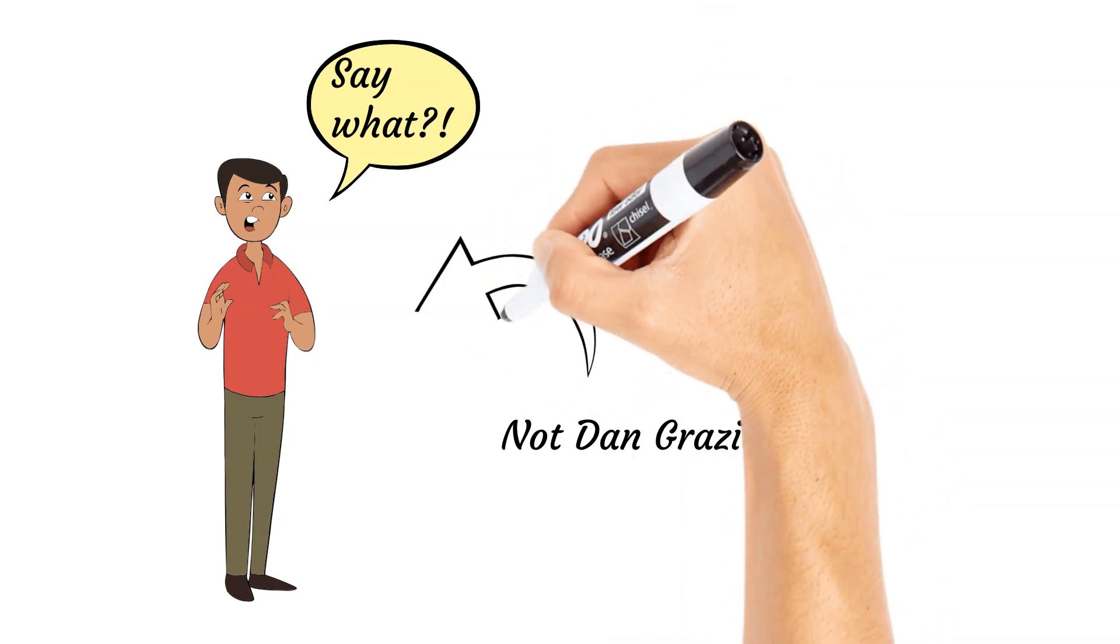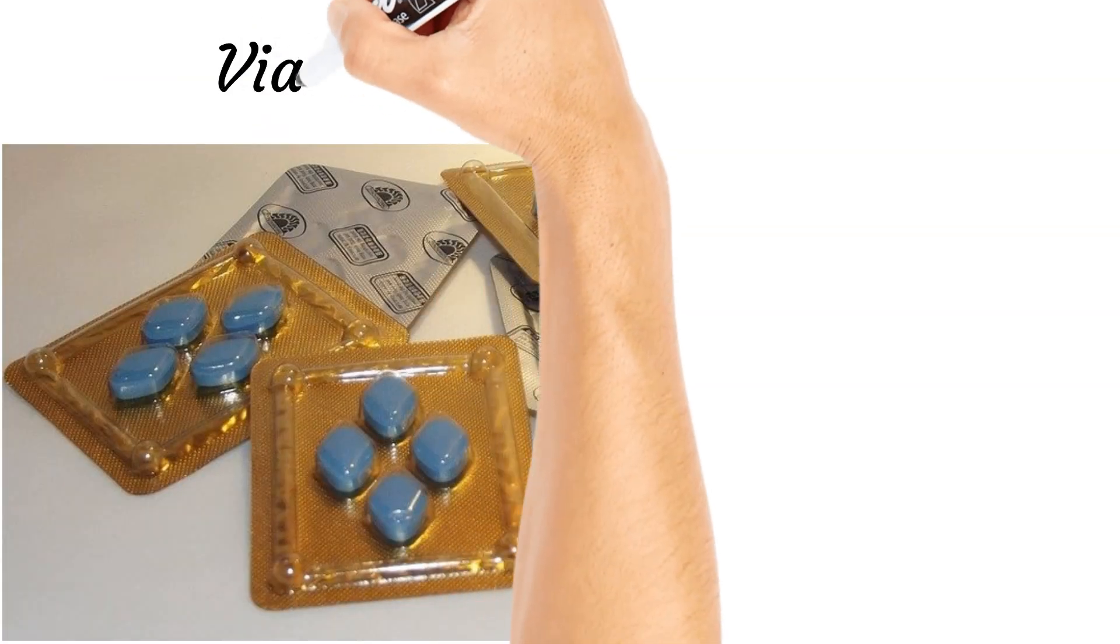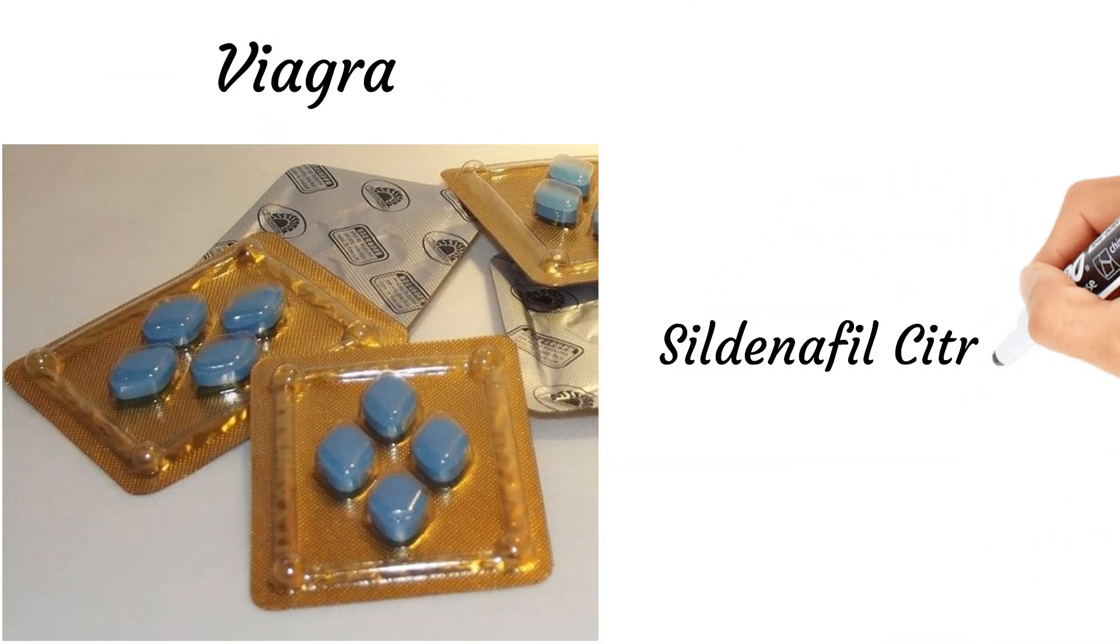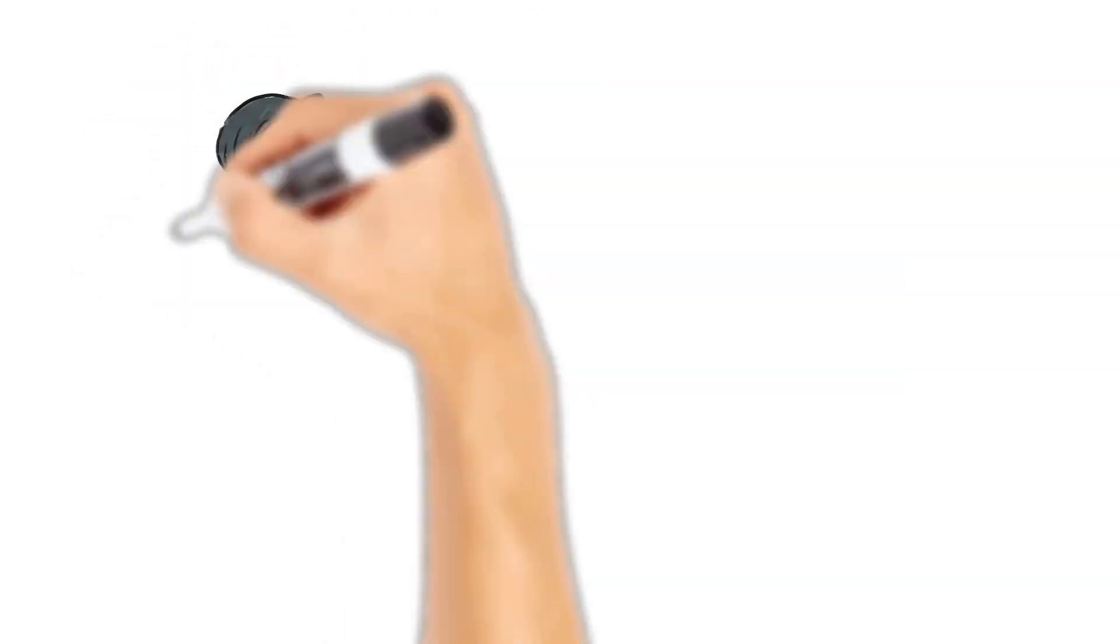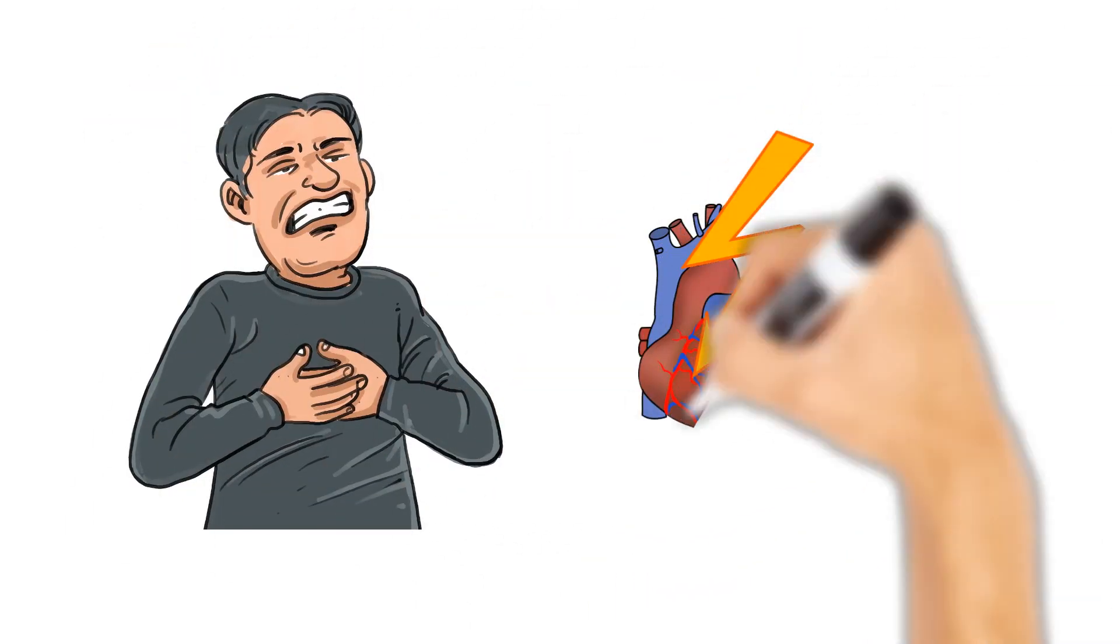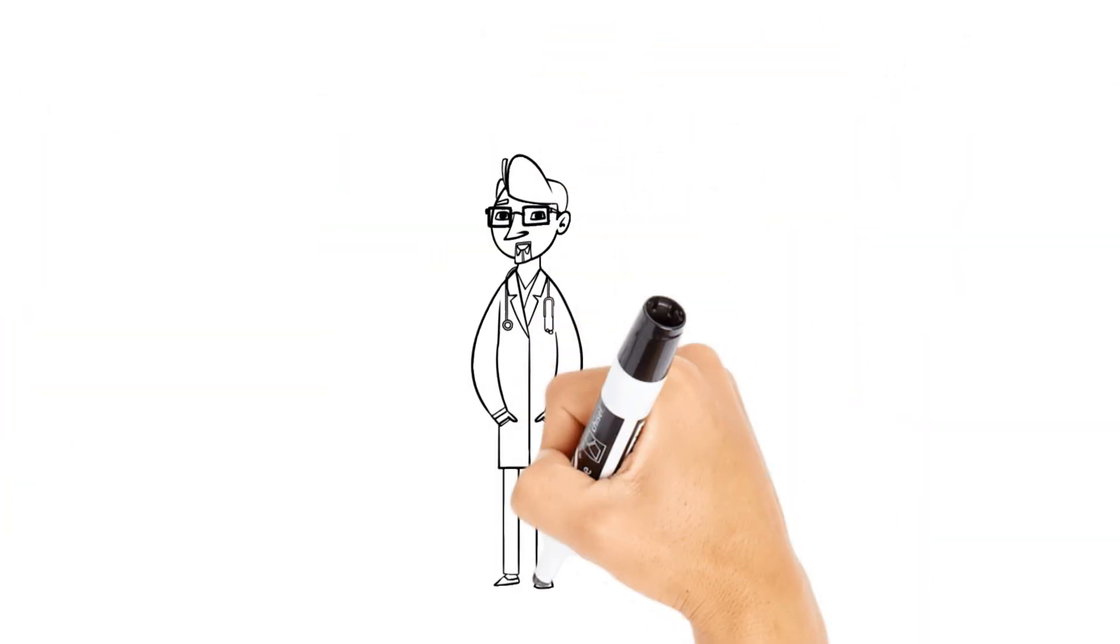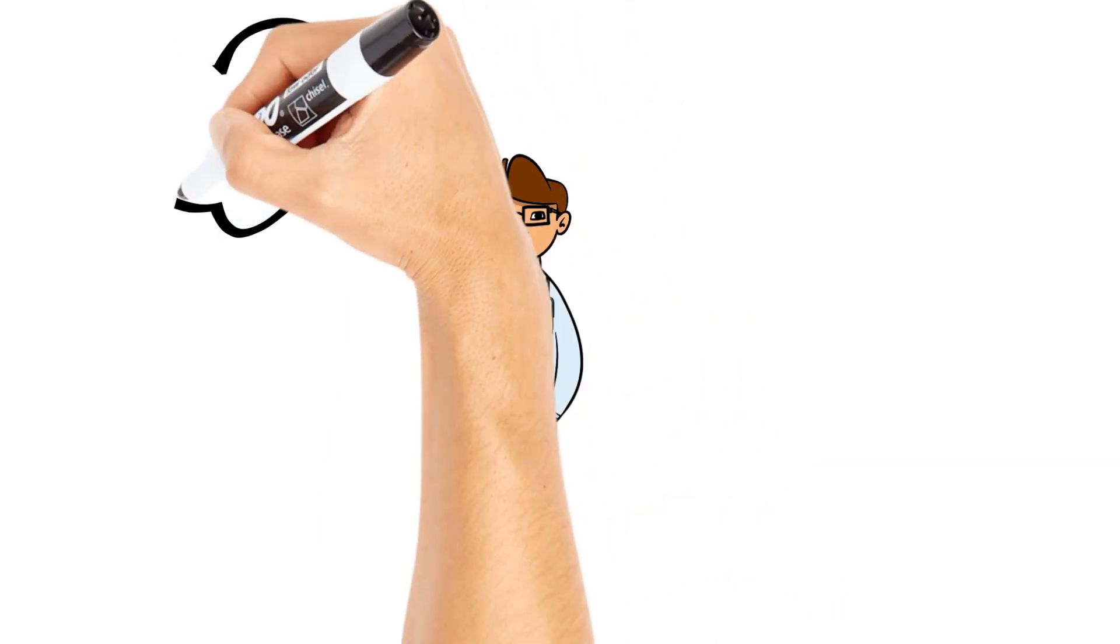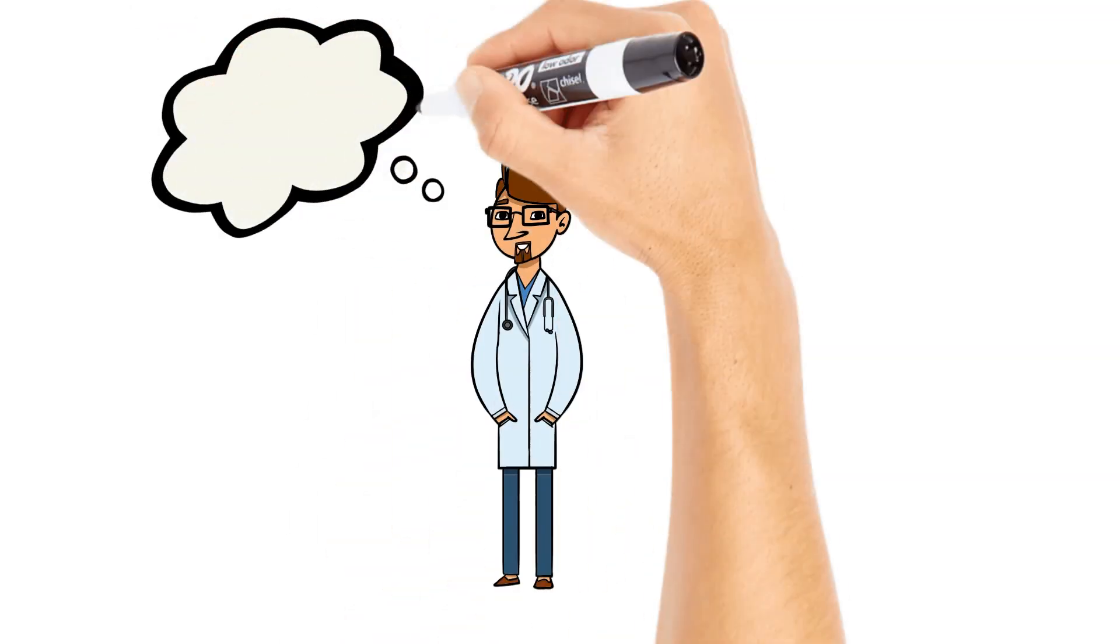Viagra, whose generic name is sildenafil citrate, was originally developed by Pfizer to treat cardiovascular problems. It was supposed to be used to dilate the blood vessels of the heart. Researchers were soon to discover, however, that the blood vessels being dilated were not just in the heart.